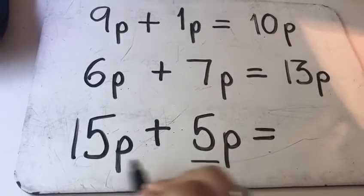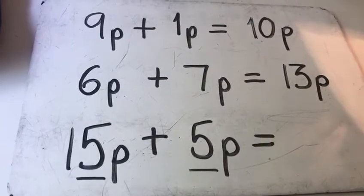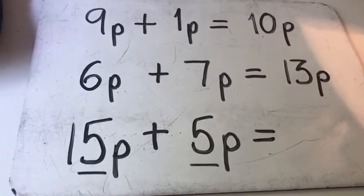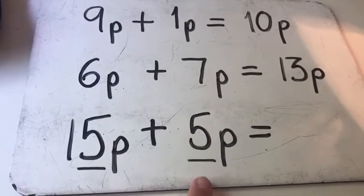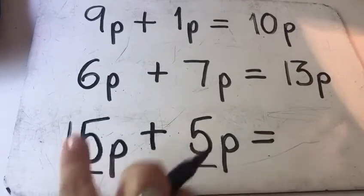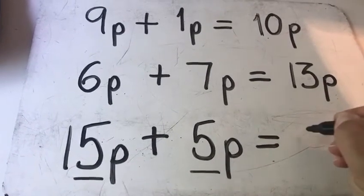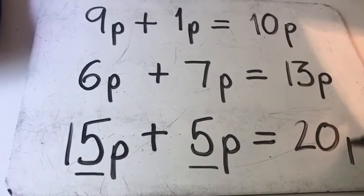Okay I can see a 5 and a 5 and I know those are number bonds to 10. So if I've got 15 and 5 I know that's a number bond to 20. So I can add that again in my head. 5 and 5 and 10 from the 15, 20p.